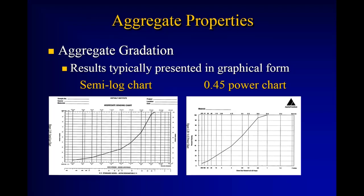Once we have our aggregate gradation, you have percent passing on the vertical column and sieve size on the horizontal. In Superpave, we typically plot against this 0.45 power chart. The percent passing is in base 10, and the sieve sizes are logarithmically plotted based on the sieve size in metric to the 0.45 power.